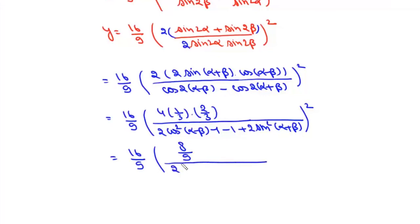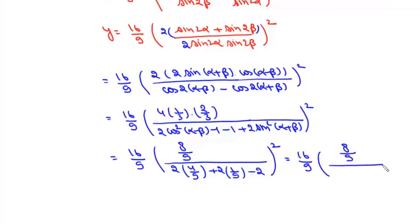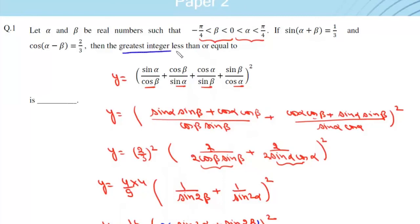So y = (16/9) × (8/9) / (2cos(α-β)·(cos(α-β)) + 2sin²(α+β) - 2)². Substituting: 2×(2/3)² = 8/9, and 2sin²(α+β) = 2×(1/9) = 2/9, giving denominator (8/9 + 2/9 - 2)² = (10/9 - 18/9)² = (-8/9)². After cancellation, y = 16/9. The greatest integer less than or equal to 16/9 is simply 1, and that is the answer.